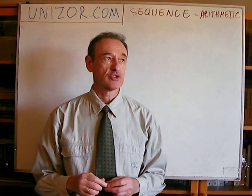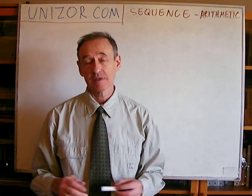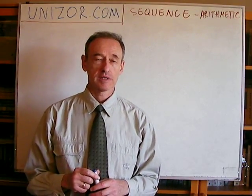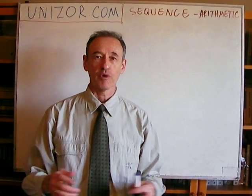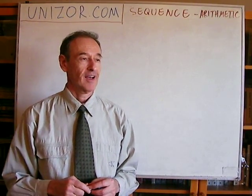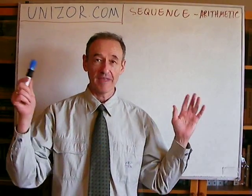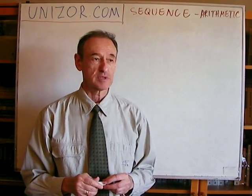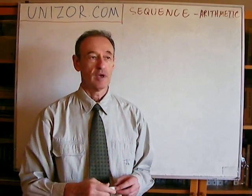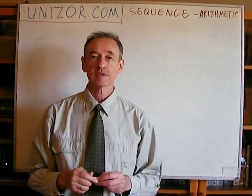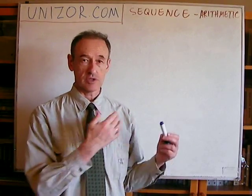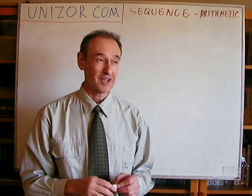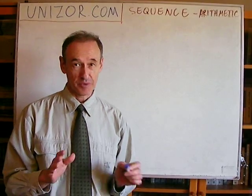Now, why do we start with this one? Just because it's a very simple one. I hope I didn't scare you during the previous lecture explaining the huge formula for the Fibonacci sequence — the square root of 5 to the nth degree, etc. The formula was very complex, but the rule for the Fibonacci sequence was quite simple: just add the two previous numbers to get the next one. And so is the rule for arithmetic sequence — very simple. I'll explain the rule, and then we will derive the formula, which is much simpler than the Fibonacci sequence formula.